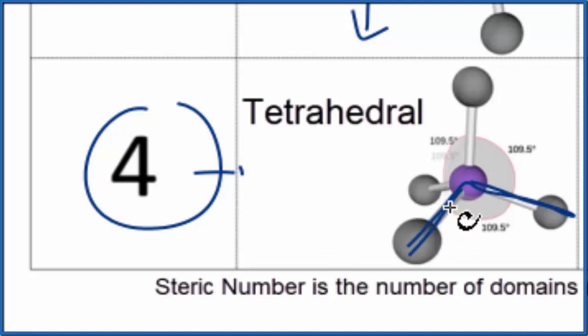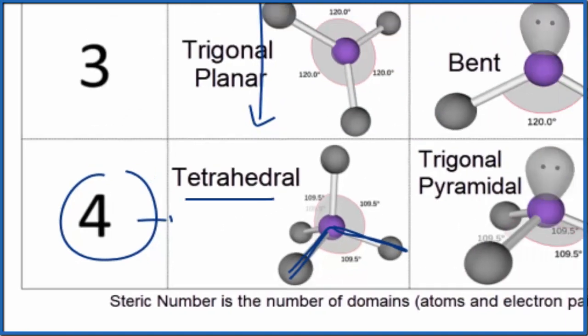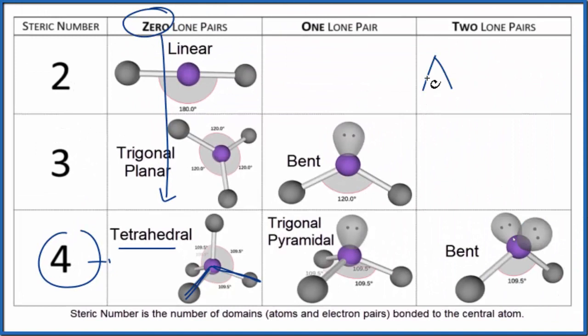There is another way we could figure out the molecular geometry. We could use the AXE notation. So A, that would be the central atom, that's the Si. X, that would be the chlorine atoms. We have four chlorine atoms, and then E, that would be the lone pairs. We don't have any lone pairs, so let's just call that zero. So you would have either memorized that AX4 is tetrahedral, or if you were allowed, you could look it up on a table.